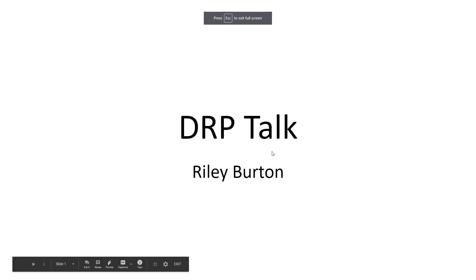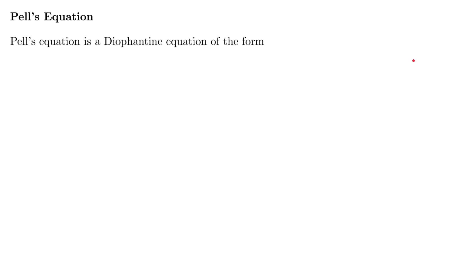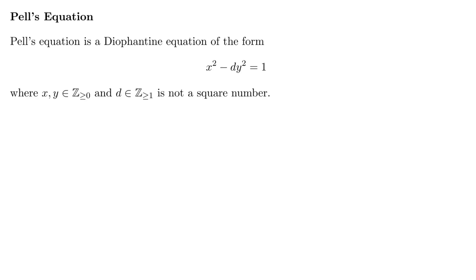I'm Riley Burton and today I'm going to be talking about Pell's equation. Pell's equation is a Diophantine equation of the form x squared minus dy squared equals 1, where x and y are non-negative integers and d is a positive integer and is not a square number.